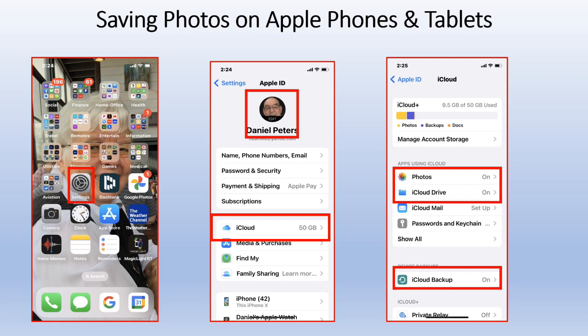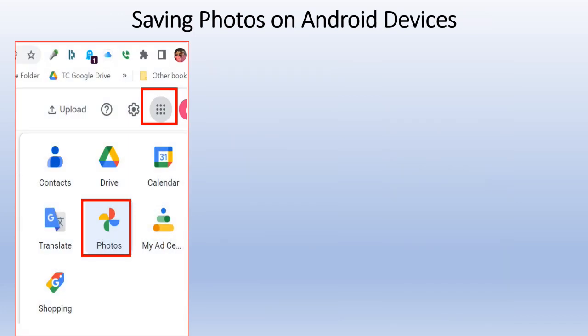If you don't back up and your phone dies, gets stolen, or gets destroyed, you won't have any way to retrieve your photos. On Android, you'll use Google Photos. If it's not on your screen, go to your Gmail account, open the nine-dot grid, and one of the options will be Google Photos. Click on it to open it, and drag it to your home screen so it's always visible.